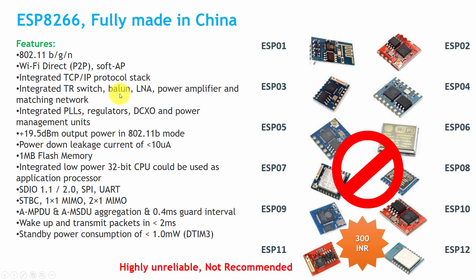The last board discussed in this tutorial is the ESP8266, fully made in China. The speaker does not recommend using it, although IoT enthusiast engineers use it very frequently because it is very cheap — available for around 200 to 400 Rupees depending on where you buy. It has most of the supports the previous boards have, but it does not have an ARM microcontroller — it uses a Chinese 32-bit microcontroller. The speaker considers this board completely unreliable.